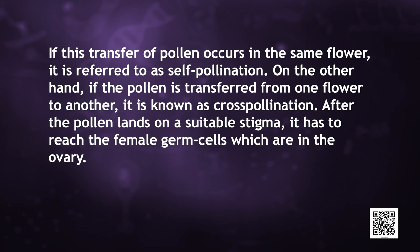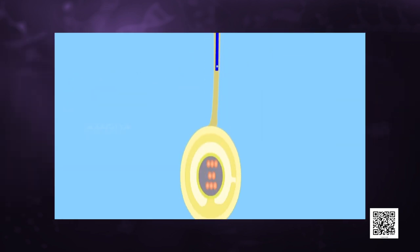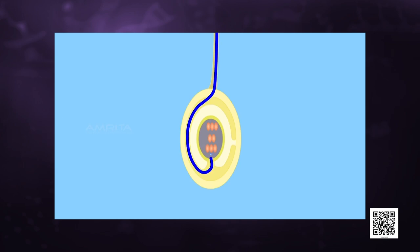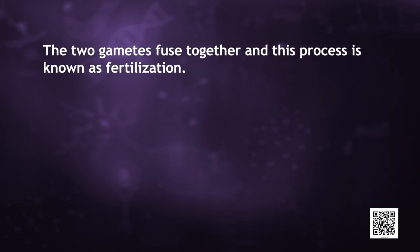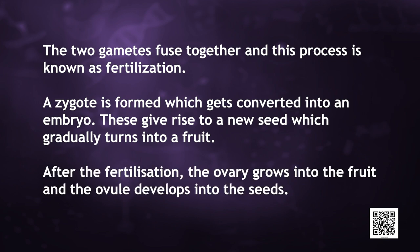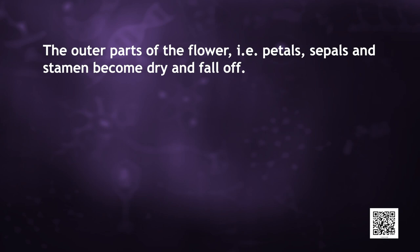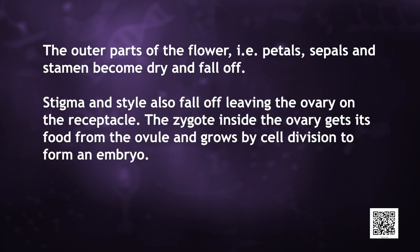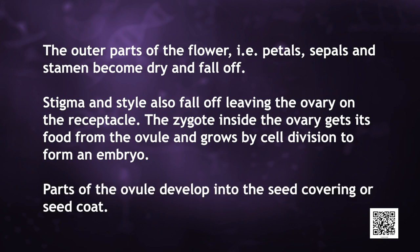After the pollen lands on a suitable stigma, it has to reach the female germ cells which are in the ovary. A tube grows out of the pollen grain and travels through the style to reach the female gamete present in the ovule of the ovary. The two gametes fuse together — this process is known as fertilization. A zygote is formed which gets converted into an embryo. This gives rise to a new seed which gradually turns into a fruit. After fertilization, the ovary grows into a fruit and the ovule develops into the seed. The outer parts of the flower — the petals, sepals, and stamen — become dry and fall off. The stigma and style also fall off, leaving the ovary on the receptacle. The zygote inside the ovary gets its food from the ovule and grows by cell division to form an embryo. Parts of the ovule develop into a seed covering or seed coat.